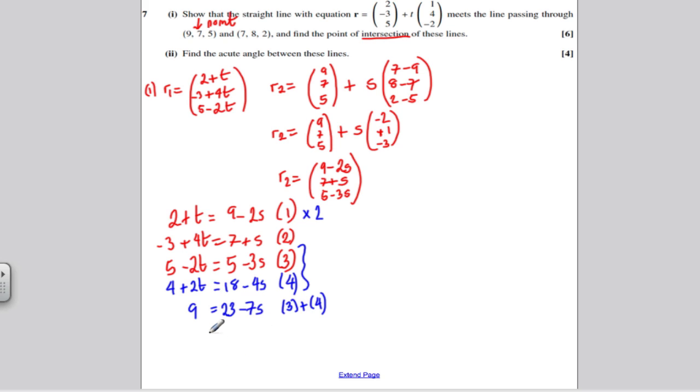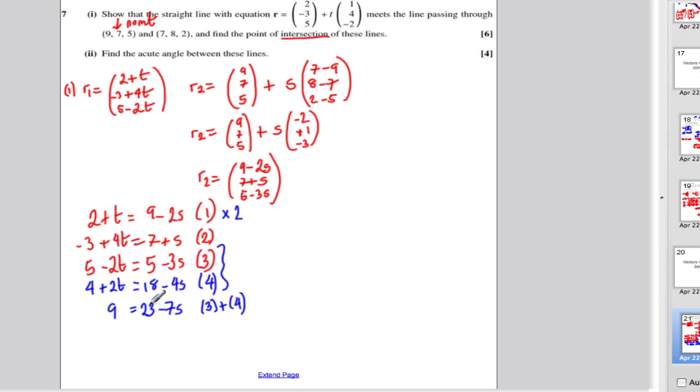Making s the subject of the formula, or solving for s, subtract 23 from both sides, I would get minus 7s equals minus 14. So s, therefore, must equal 2. So s is 2 is one of the answers.